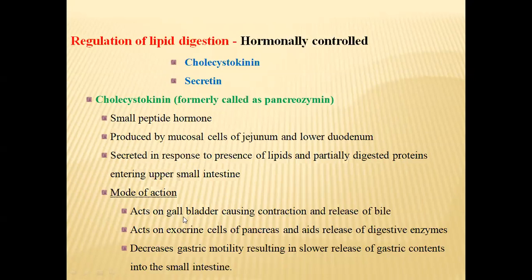When partially digested proteinaceous food and lipid food enter the duodenum, that triggers the mucosal cells of the jejunum to produce cholecystokinin. The mode of action of cholecystokinin — this hormone acts on the gallbladder causing contraction and release of bile. Whenever lipid food and partially digested protein food enter the duodenum, the jejunum wall secretes cholecystokinin. Cholecystokinin then works on gallbladder walls causing contractions, which causes release of bile juice.